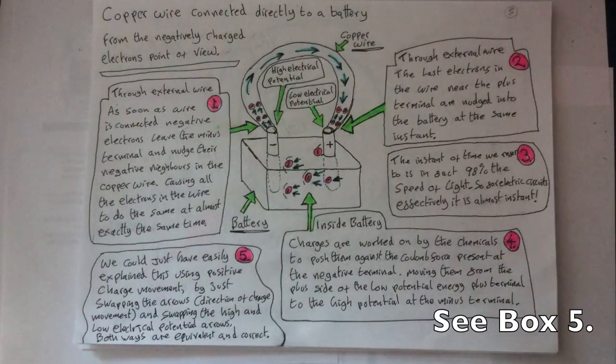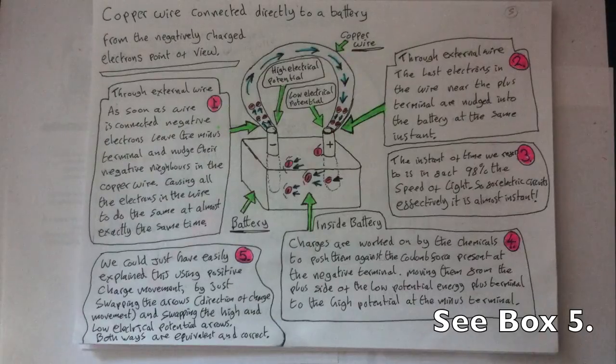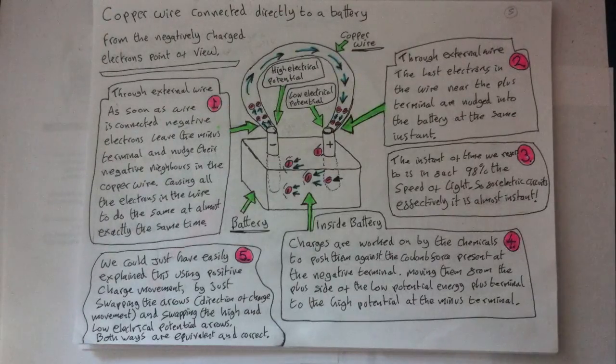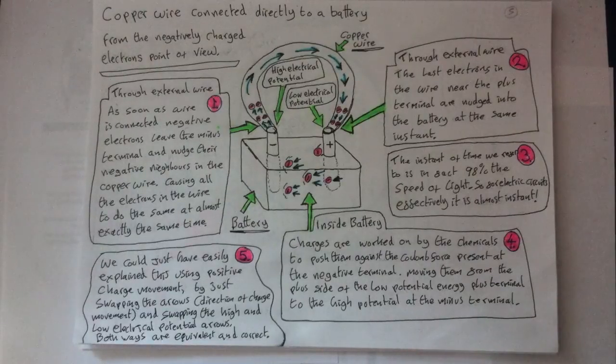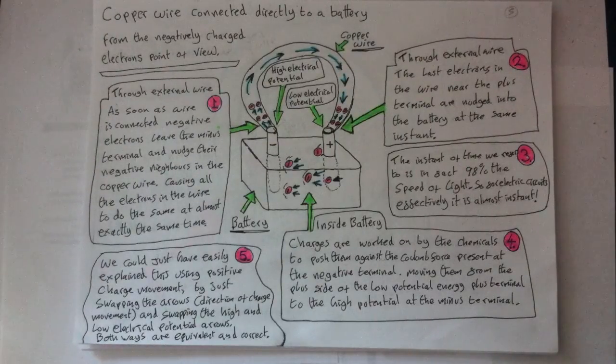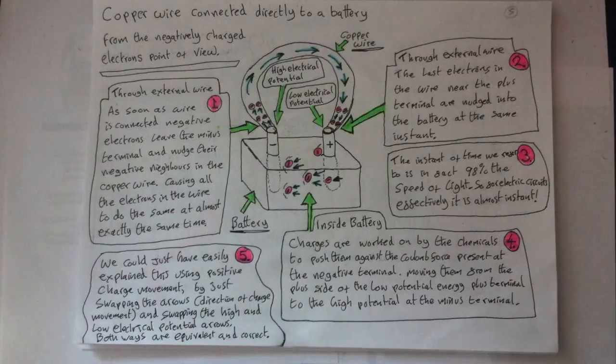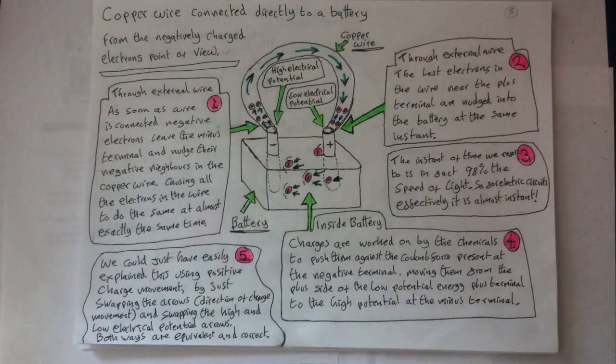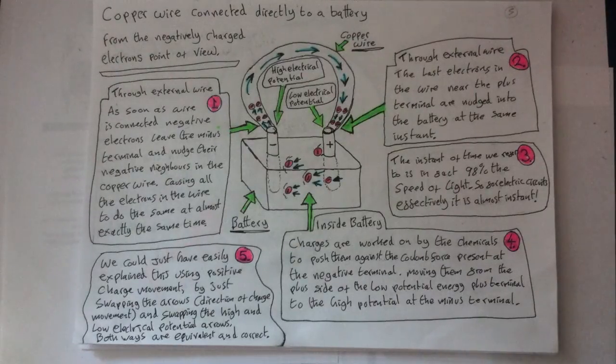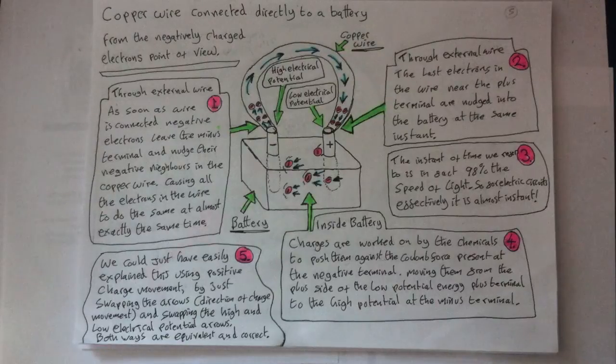If we wanted to, we could just as easily have talked about this cycle of current in terms of the movement of positive charges instead of negative ones. We can look at it from either point of view, because in all circuits minus charges move one way and plus charges at the same time will move in the opposite direction. Here we just chose to describe it from the electron's point of view. It's just a lot easier to describe electrons moving than it is to describe the absence of them, for example holes moving the other way. Hence why we chose this way of describing the move of charge through the battery.